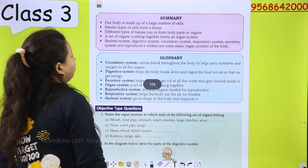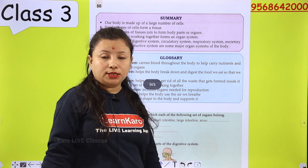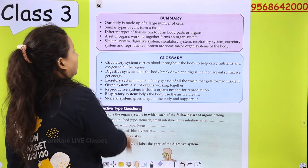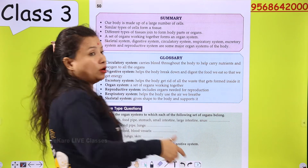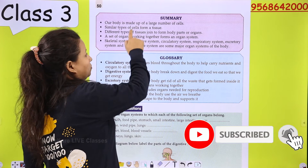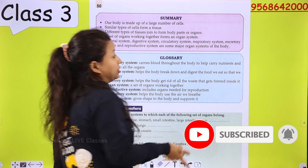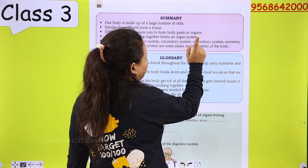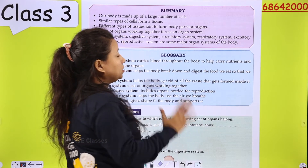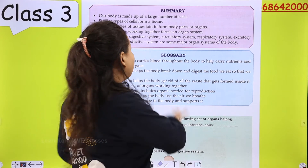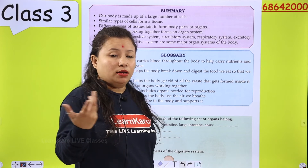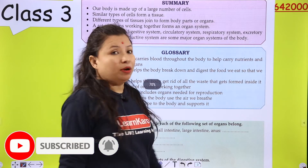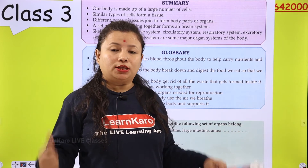Now the summary. Our body is made up of a large number of cells. Similar types of cells form a tissue. Different types of tissue join together to form body parts or organs. A set of organs working together forms an organ system. The skeletal system, digestive system, circulatory system, respiratory system, and reproductive system are some major organ systems of the body. If you don't work the whole parts, your body will be less effective; when you work all parts together, we will be active.